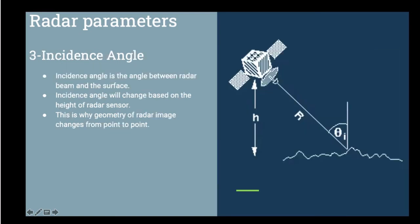And now the incidence angle. The incidence angle is the angle between radar beam and the surface. The larger angles will be more sensitive to earth's surface and will penetrate less. However, the small angles will penetrate more and will result in high backscatter.